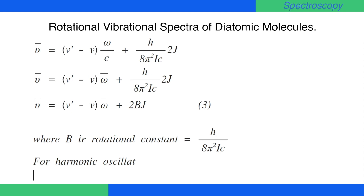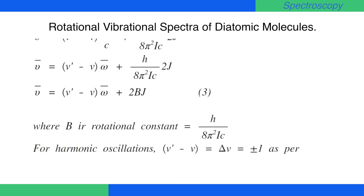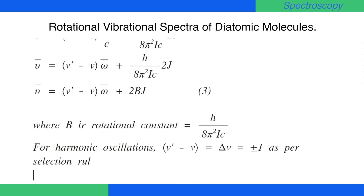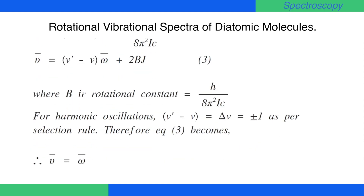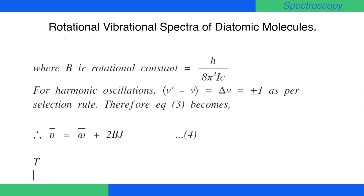For harmonic oscillations, v' − v (i.e., Δv) = ±1 as per the selection rule. Therefore, equation 3 becomes ν̄ = ω̄ + 2Bj, that is equation number 4.